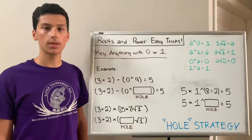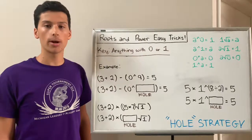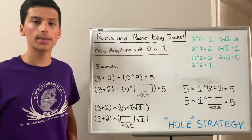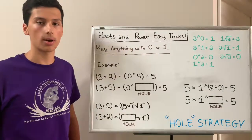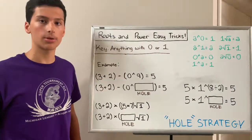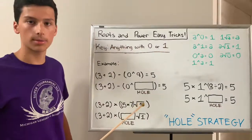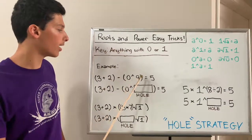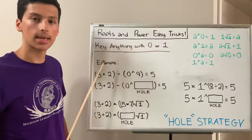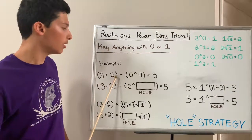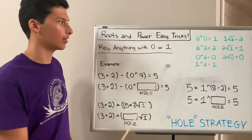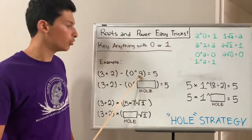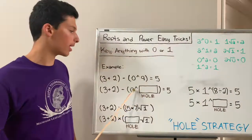Now that we've covered the basics, here are some tricks when working with power and root — these will make you want to put power and root in the required part of the map instead of forbidden. These strategies are called the hole strategy. It creates a hole where you can put any expressions and numbers, but the equation still has the same value. For example, if the goal is 5, you could do (3 plus 2) minus (0 to the power of 9). Since 0 to the power of anything is 0, subtracting 0 doesn't change the value. You can put other expressions in this hole to get the same value of 5.